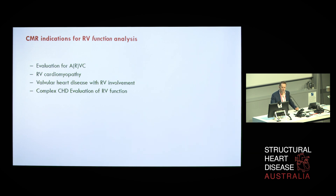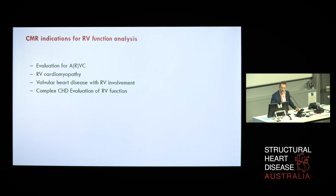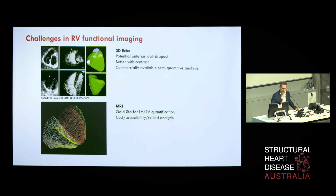There are several indications for functional and anatomical analysis of the RV using MRI. There's now an indication in Australia for evaluating ARVC — with the R in brackets — because it's really a syndrome that affects both ventricles. Any time there's a suspicion of a right ventricular cardiomyopathy, when there's discordant or incomplete information from echocardiography, especially with co-existent valvular heart disease, and finally in complex congenital cases where cross-sectional anatomy and function can be simultaneously evaluated.